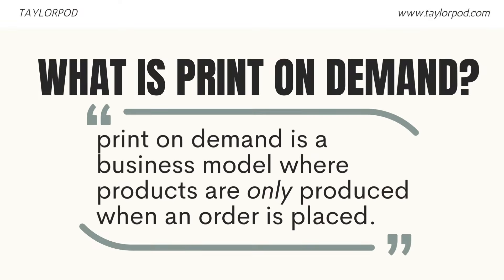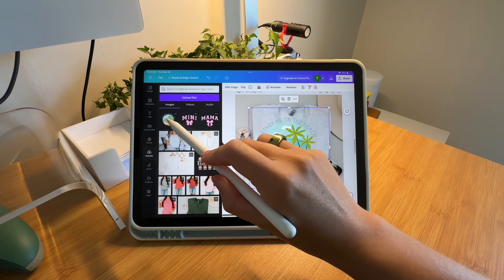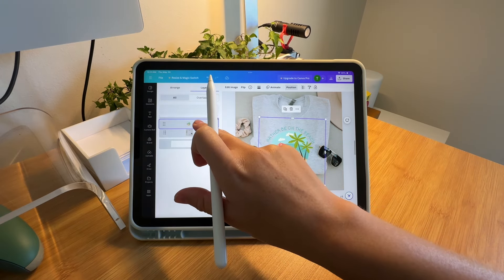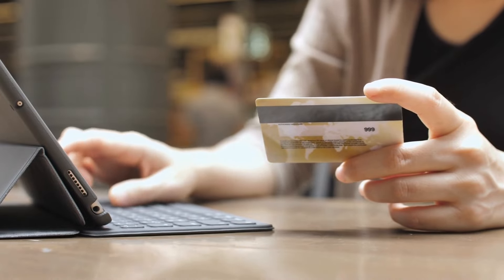If you are new to learning about print on demand, it is a business model that allows you to essentially have a physical product shop where you do not carry any physical inventory. What you do on your side of things is typically create designs for products that you are looking to sell. Very common amongst print on demand is selling apparel. You would create a design for that apparel product and then list it on a platform like Etsy or Shopify. When a customer purchases your product, that information gets sent over to your print provider, who will actually make, package, and ship that entire order for you.